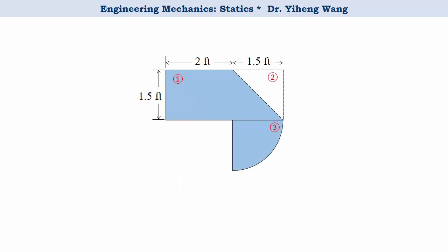Or if you decide, this composite area can be considered as a bigger rectangle, minus a triangle, and then plus again a quarter of a circle. That is fine too. We again put the area into an x-y coordinate system, and find the centroid of each component area, again with respect to the same coordinate system.